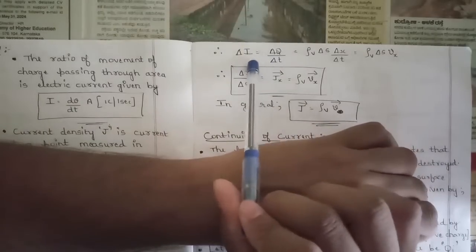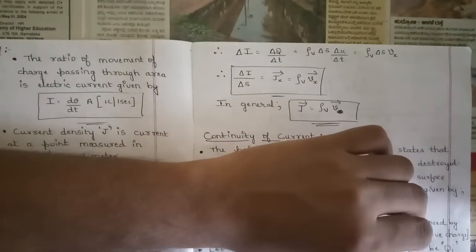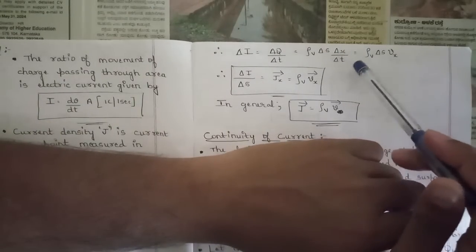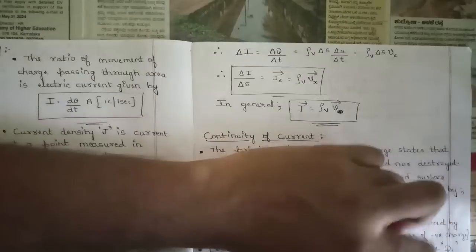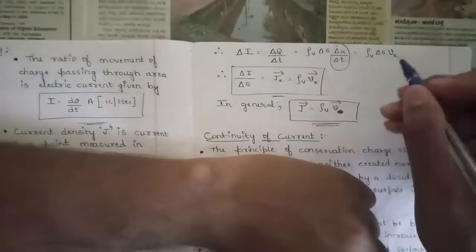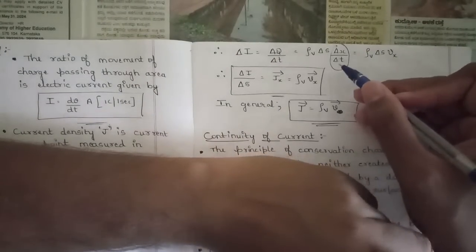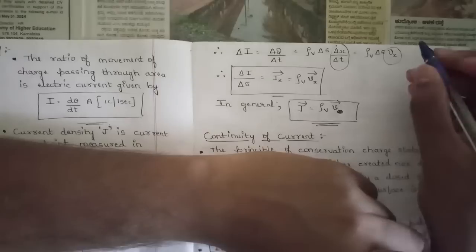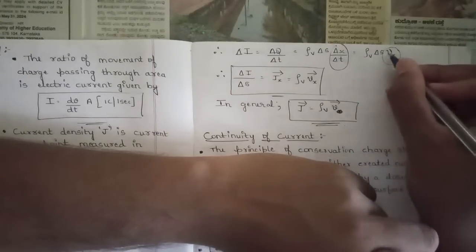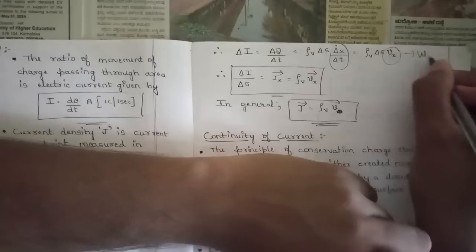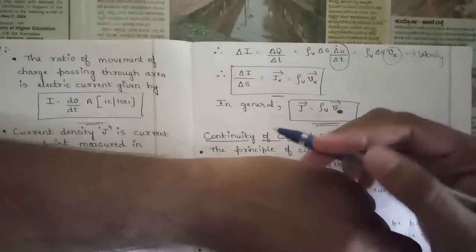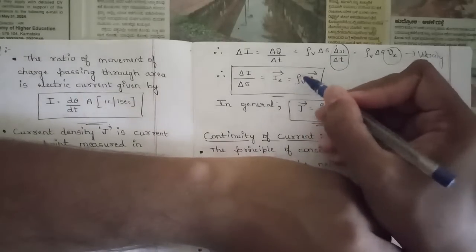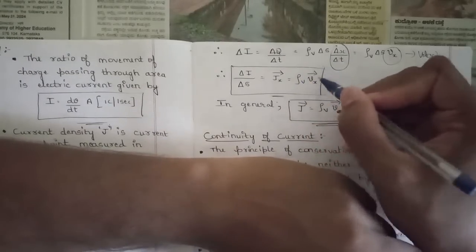We know that Delta I = Delta Q / Delta T. Delta Q is rho_V · Delta S · Delta X, so dividing by Delta T gives Delta I = rho_V · Delta S · (Delta X / Delta T). Here X is displacement and T is time, so Delta X / Delta T is velocity V_x. Therefore Delta I / Delta S = J_x = rho_V · V_x vector.